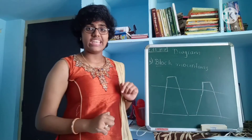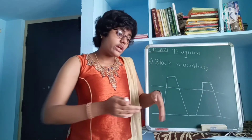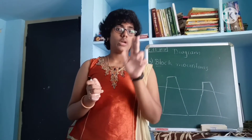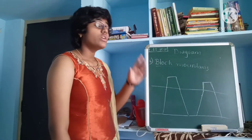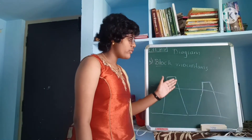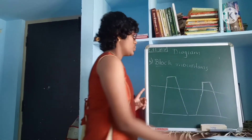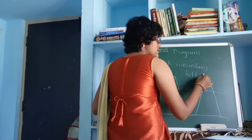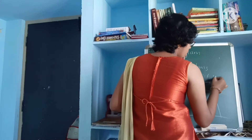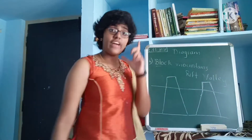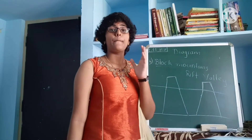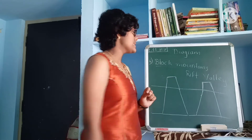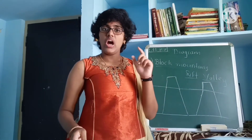A valley is a river or stream which flows through two mountains or two hills. When a valley flows between two block mountains, it is known as a rift valley.